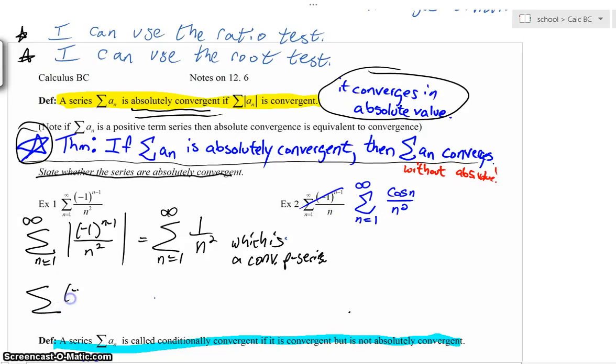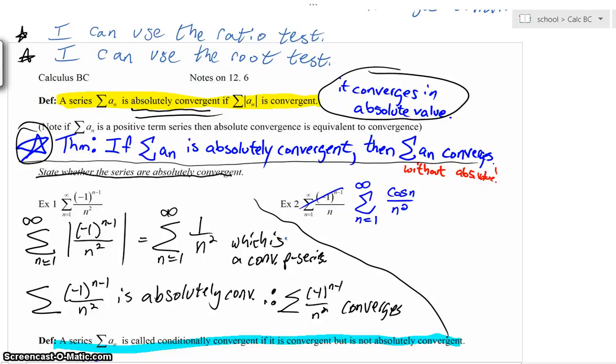So I can say this series (-1)^(n-1)/n² is absolutely convergent. By the way, here's the follow up. Therefore, this series converges. Sometimes kids almost look at that second statement and they'll say, why are you repeating yourself? I'm not. I'm now saying that you converge without absolute value. There'd be no need for the alternating series test in that regard, would there? That's pretty exciting. If you're looking for absolute convergence, if you get that to be true, you get convergence without the absolute value thrown in for free.